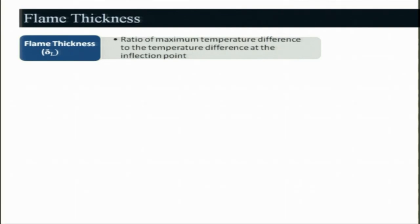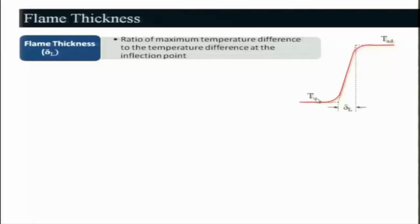Flame thickness is basically the ratio of the maximum temperature difference to the temperature gradient at the inflection point — the point where the slope of the temperature profile is changing. For example, looking at this temperature profile, we will be approximating it as a linear profile for our computation. In the actual situation there will be curvature, and the inflection point will be where the slope is changing from positive to negative. We define delta L as the flame thickness by taking a tangent, which is T_f minus T_u divided by the temperature gradient at ignition.